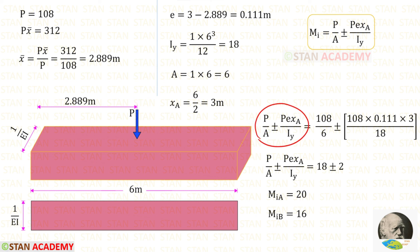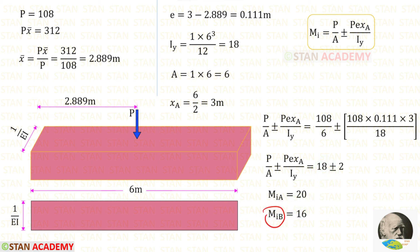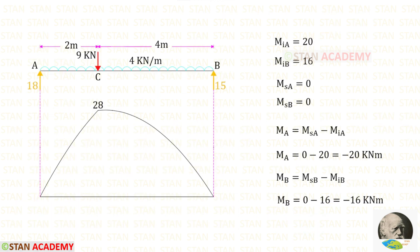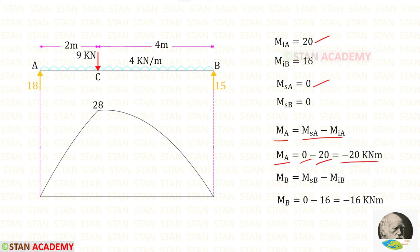Now applying all values in the formula: for M_ia we select the positive sign, getting 18 + 2 = 20; for M_ib we select the negative sign, getting 18 − 2 = 16. Since M_sa and M_sb are both 0, the fixed end moment Ma = M_sa − M_ia = 0 − 20 = −20 kilo newton meter, and Mb = M_sb − M_ib = 0 − 16 = −16 kilo newton meter.